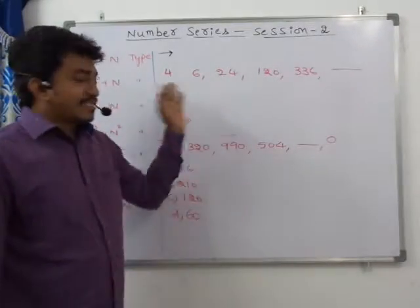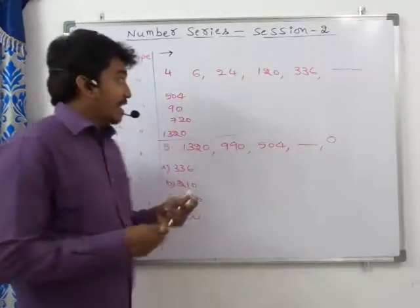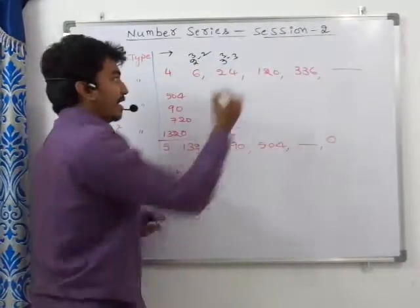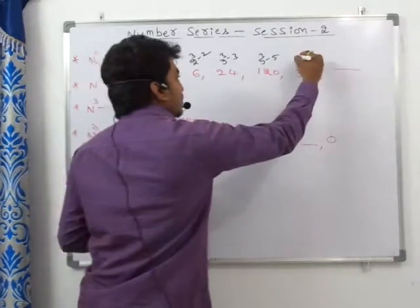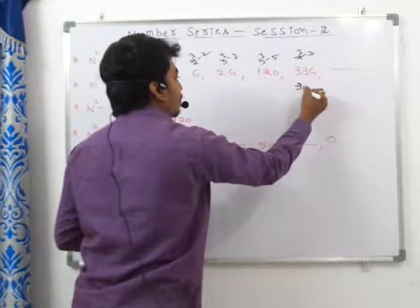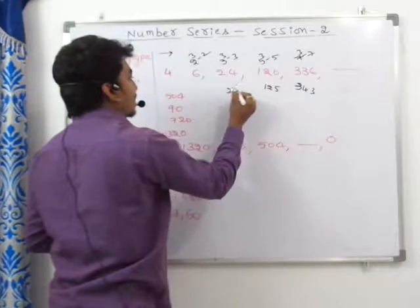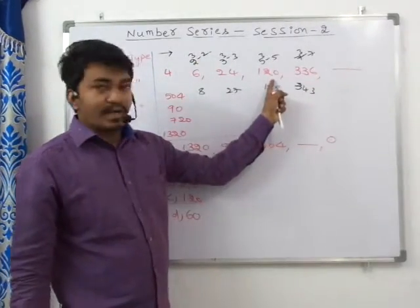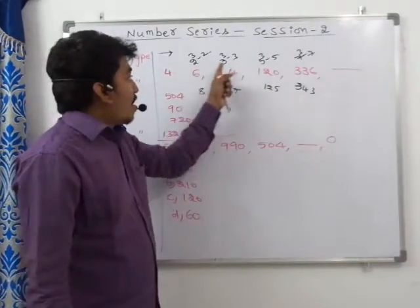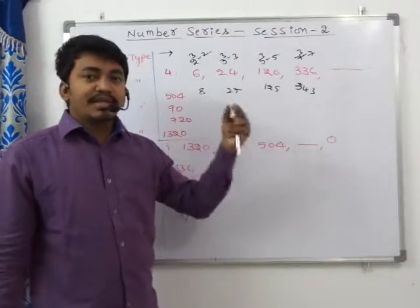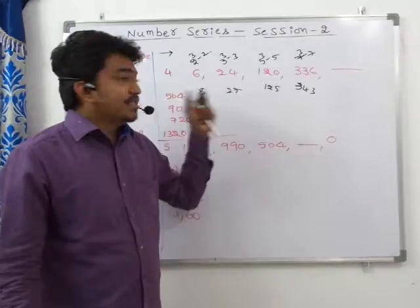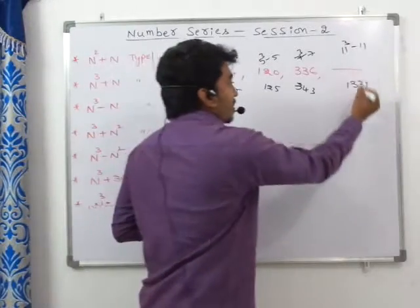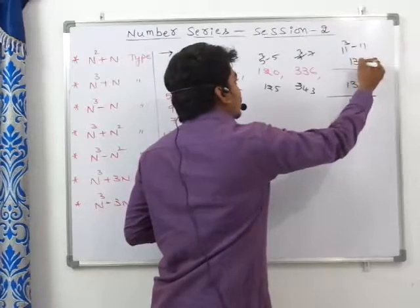For question 4: 6 = 2³ - 2 (8 - 2), 24 = 3³ - 3 (27 - 3), 120 = 5³ - 5 (125 - 5), 336 = 7³ - 7 (343 - 7). All base numbers — 2, 3, 5, 7 — are prime numbers. The next prime is 11, so 11³ - 11 = 1331 - 11 = 1320. That is the missing number for question 4.